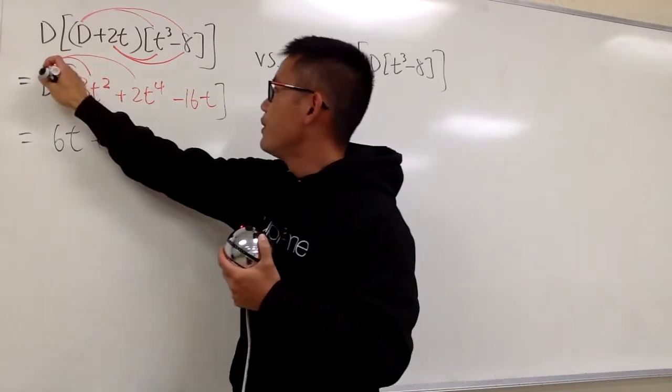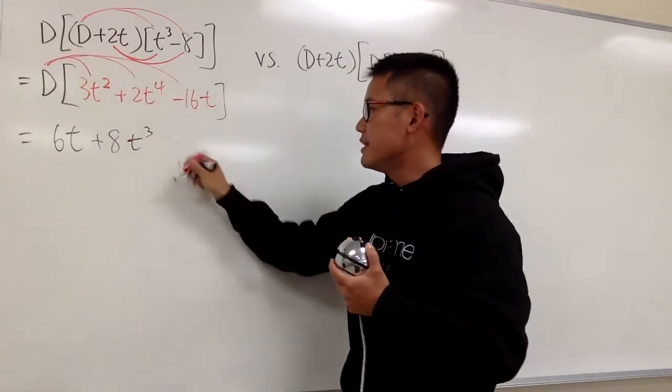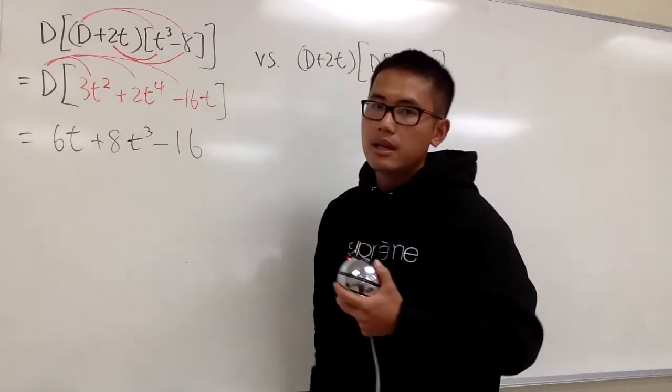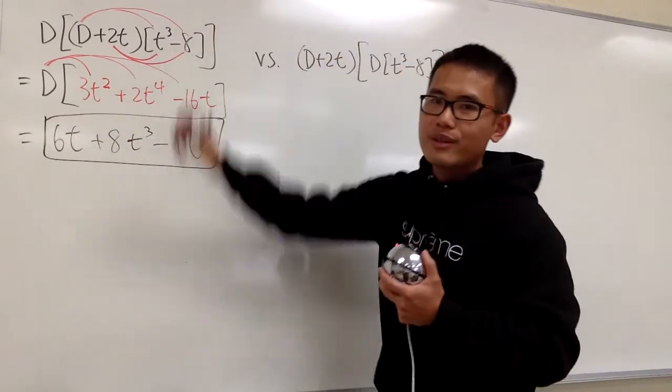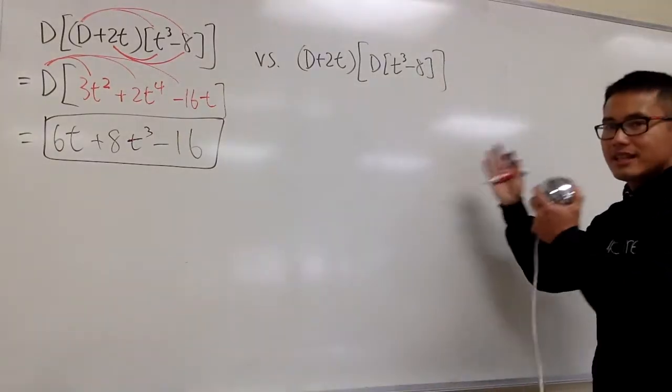At the end, we differentiate negative 16T, so we have negative 16. That's it. This will be the result for that equation. Now let's look at the second one.